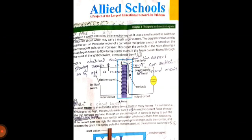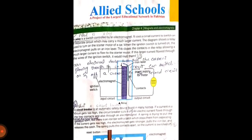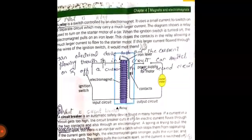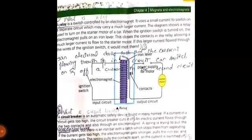This closes the contacts in the relay, allowing a much larger current to flow onto the starter motor. If this larger current flowed through the wires of the ignition switch, it would melt them because the current is too high and generates too much heat.